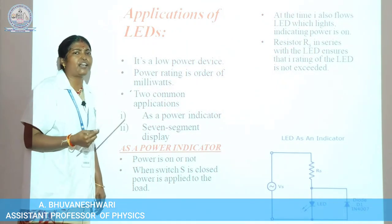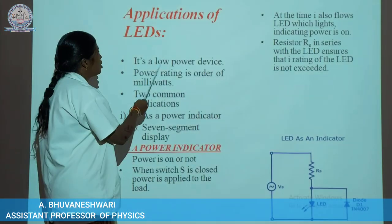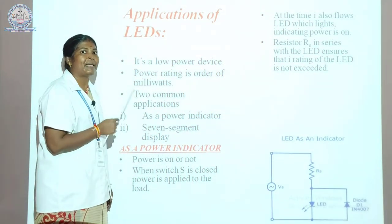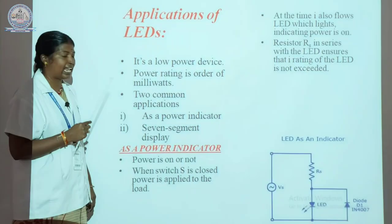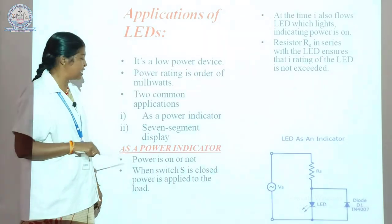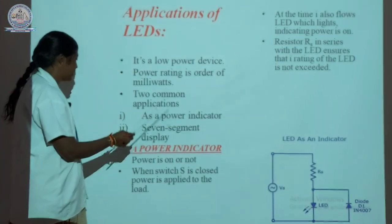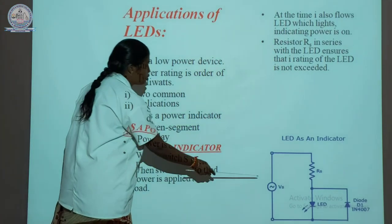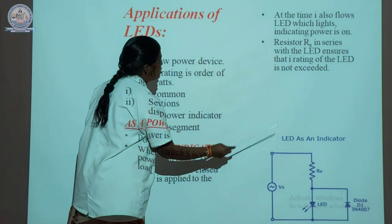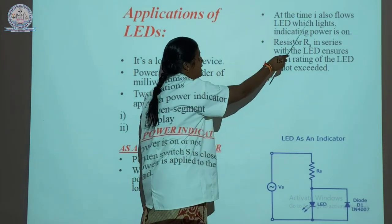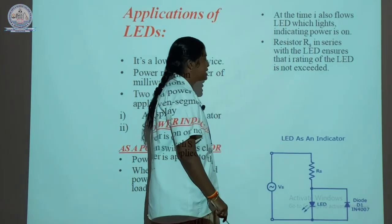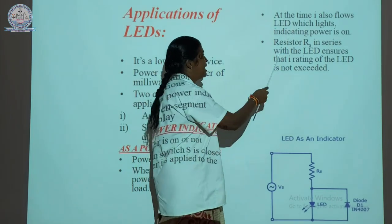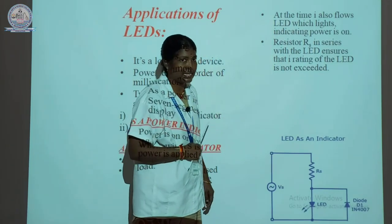The applications of LED: it is a low power device with power rating on the order of milliwatts. Two key applications are the power indicator and the seven-segment display. In the power indicator, when the switch is closed, power is applied to the load, and current also flows through the LED, indicating the power is in the on state. The resistor RS is connected in series with the LED so that its current rating is not exceeded.